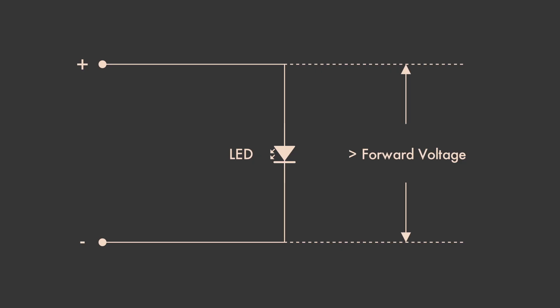But what if the supply voltage is higher than the forward voltage? Guitar pedals run off 9 volts, which is more than two. The LED tries to let so many electrons through that the voltage across it drops down to its forward voltage, but the power supply can deliver ever more electrons, so the current through the LED rises and rises.